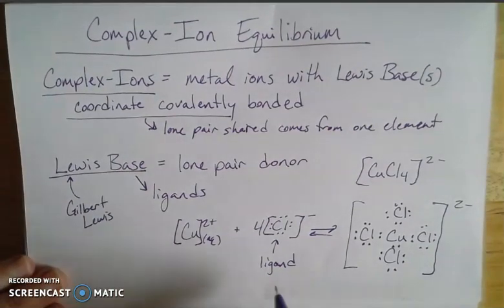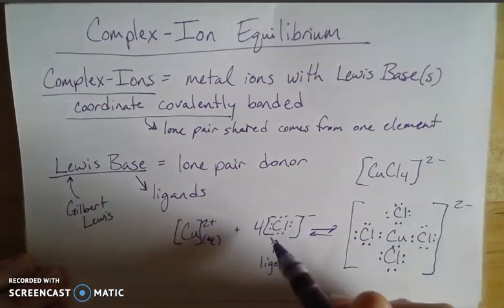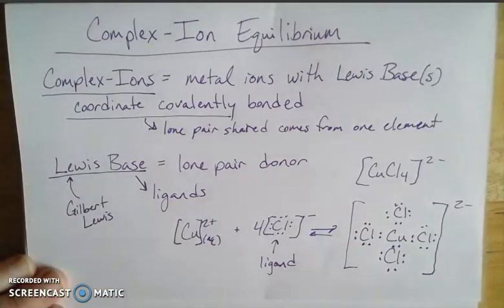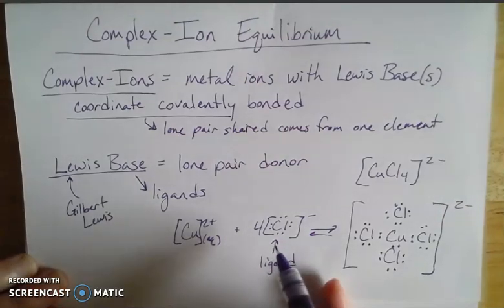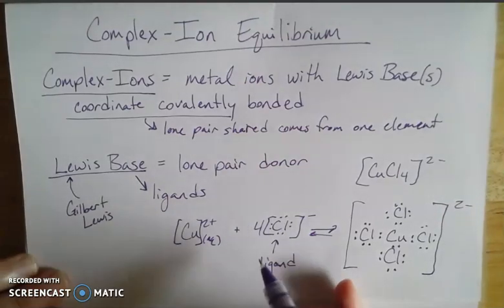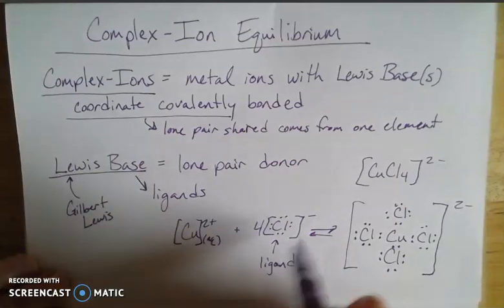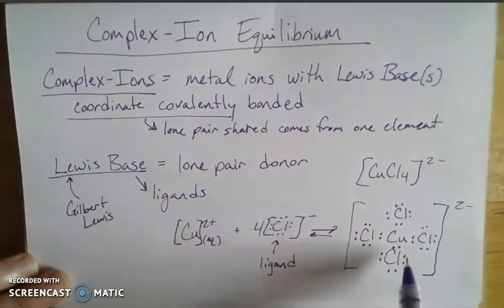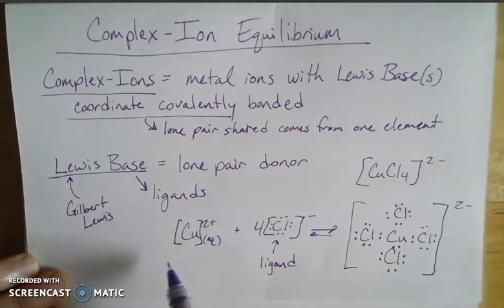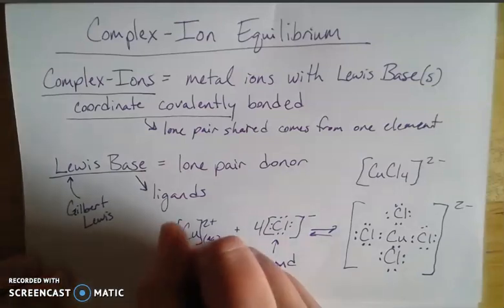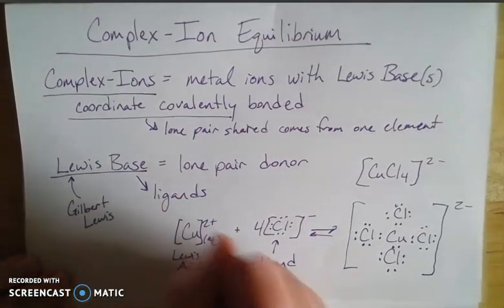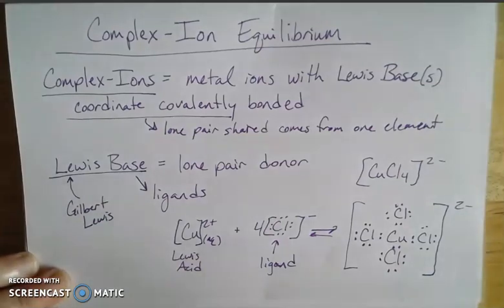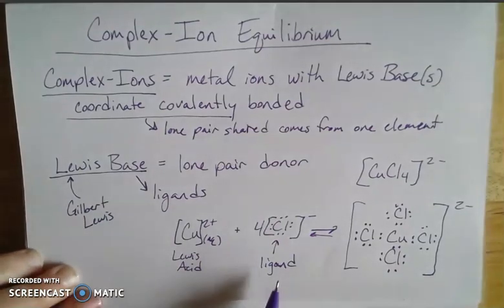And so it's going to be common to have a ligand or Lewis base with something that has lone pairs that are free to be shared, because the lone pair here is going to be shared with your copper. So we have all these shared pairs, these are your coordinate covalent bonds. So in this case, the copper two plus is actually acting as a Lewis acid, it's a lone pair acceptor. And your ligand is your lone pair donor.